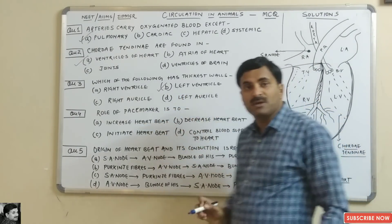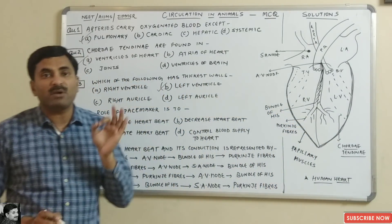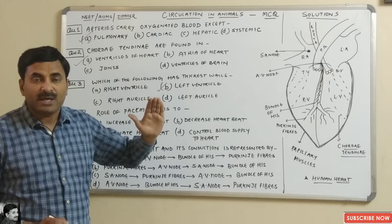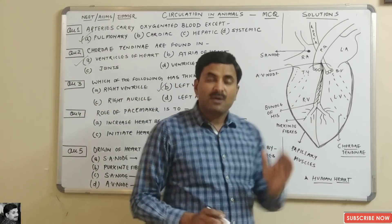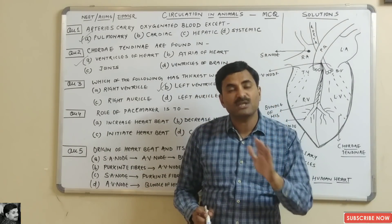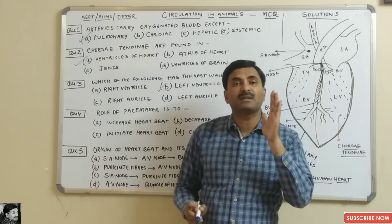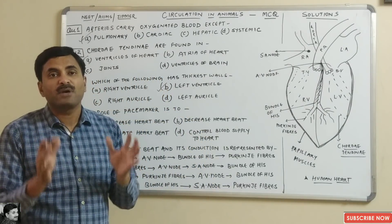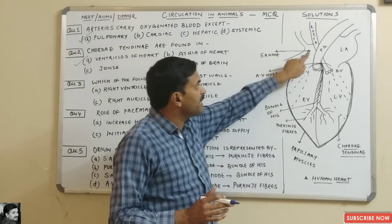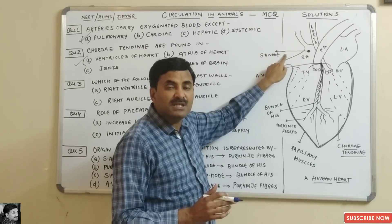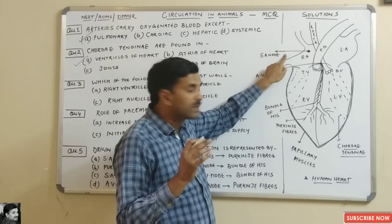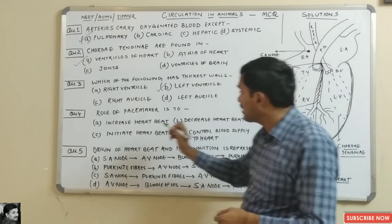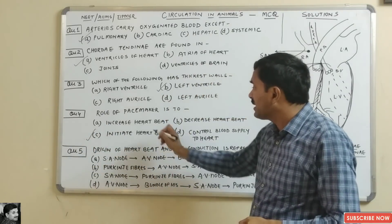Question four: the role of the pacemaker is? The pacemaker is called the SA node. We have two types of hearts: myogenic and neurogenic — human beings have a myogenic heart. In our right auricle, the SA node is a nodal tissue whose role is to initiate the heartbeat. The correct answer is option C — to initiate the heartbeat.